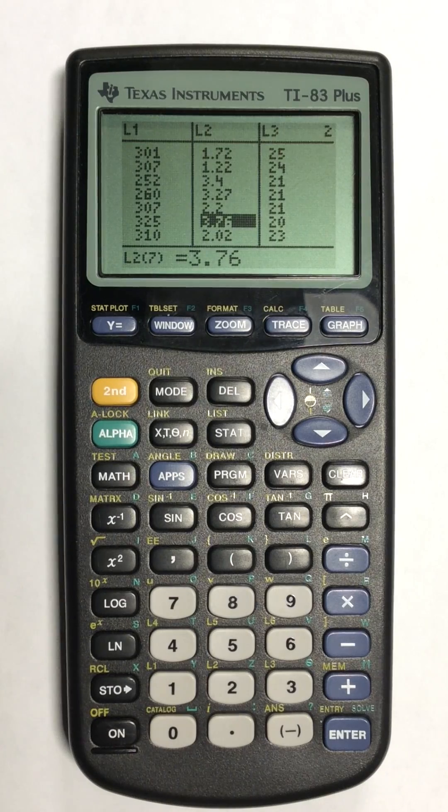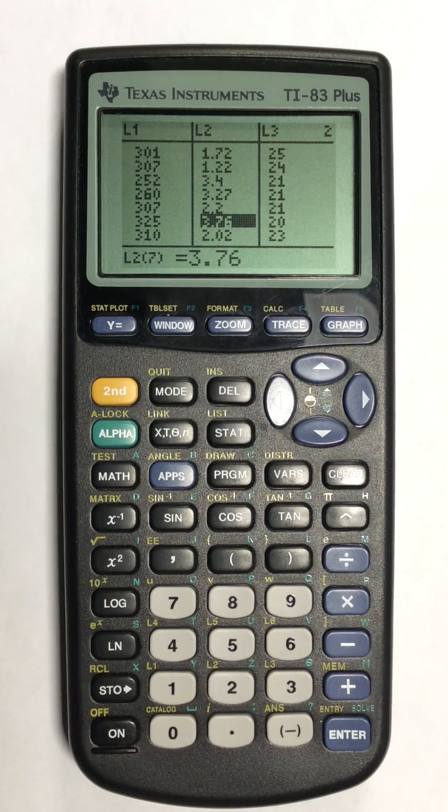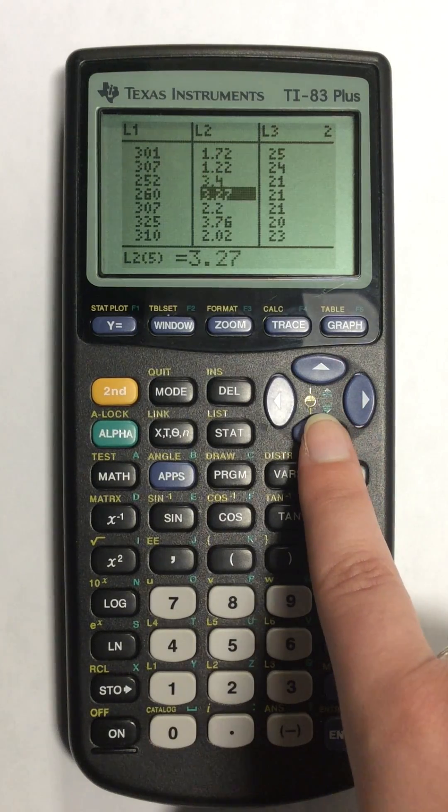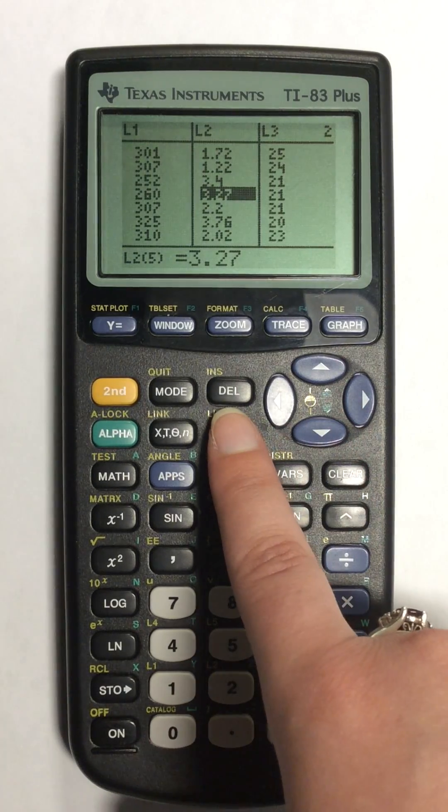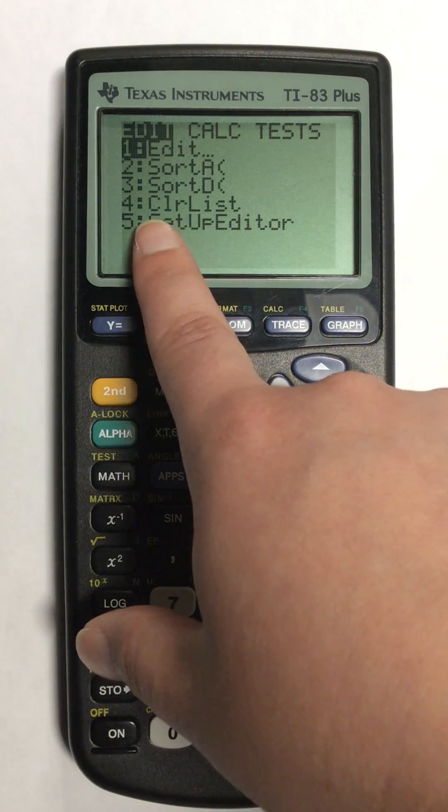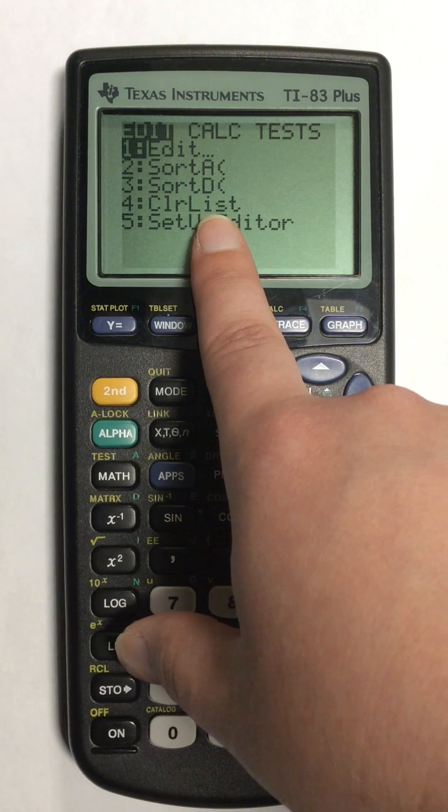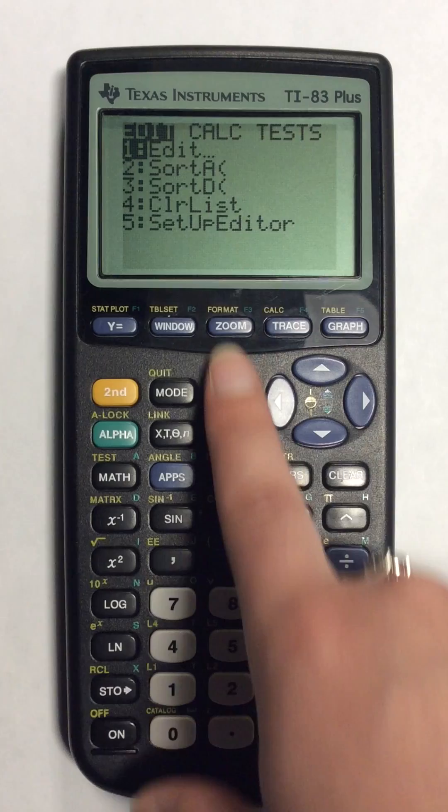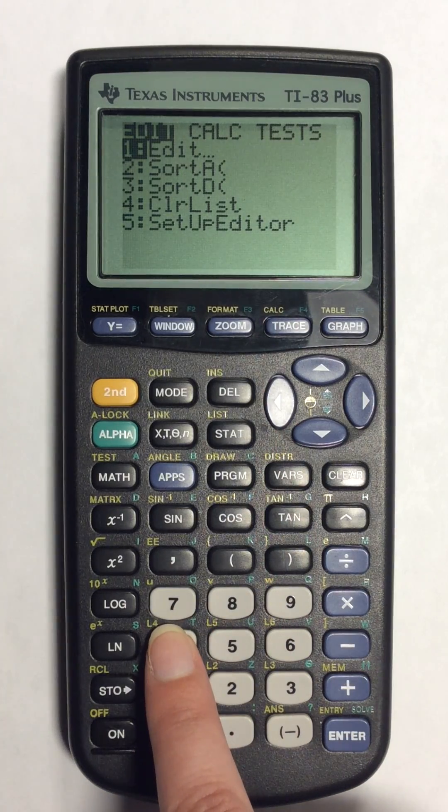Now if you need to delete an entire list, what to do for that is you can go back to stat. To delete an entire list, you're going to highlight number 4 which says clear list. I'm going to highlight number 4.